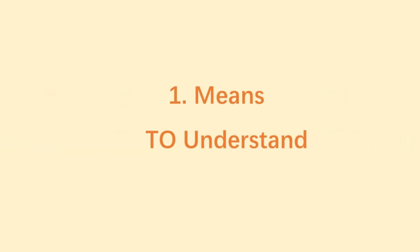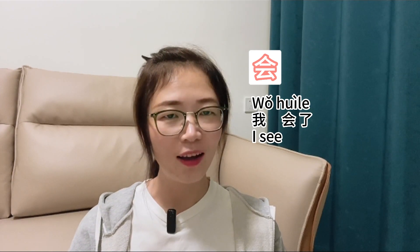Hello guys! Today's video, let's talk about the Chinese character 会. When we know a certain skill, we could say 我会了.